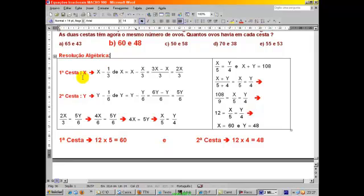Olha só. Vou chamar a primeira cesta de x, a segunda cesta de y. Então, o que eu tenho é o seguinte. A quantidade x que tem na primeira cesta, menos 1 terço de x, isso vai me dar quanto? x menos x sobre 3, que é o mesmo que quanto? 3 vezes x, 3x menos x sobre 3. Isso dá 2 terços de x, 2x sobre 3.